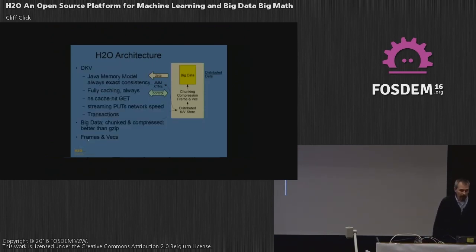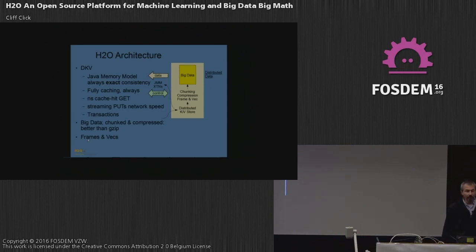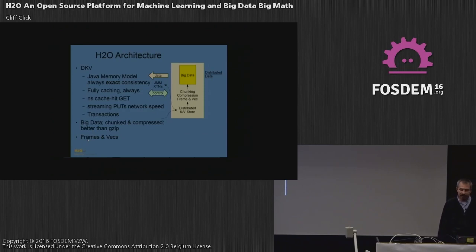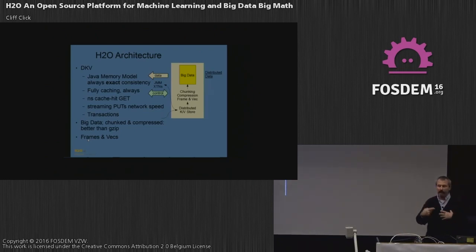There's a distributed key-value store built off the values and the remote procedure call. It gives you the Java memory model with exact consistency and speed — fully caching always. Cached gets are about 150 nanoseconds — just a hash table lookup. Puts can stream at network bandwidth as opposed to being limited by network latency, and still preserve exact consistency semantics. There's transaction support as well. The chunks live as value objects including all compression, and collections of chunks make vectors and frames to distribute big data.